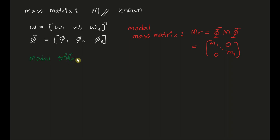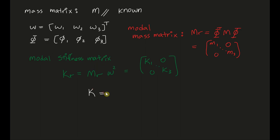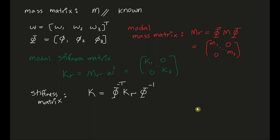The modal stiffness matrix Kr is a combination of the modal mass matrix and the eigenvalues: Kr = Mr ω². This gives a diagonal matrix. When we began this process we had no idea what the stiffnesses were in this three-story building. Using just an impact hammer and a few sensors, we identified the mode shapes and eigenvalues and used this development to identify the stiffness matrix K = φ⁻ᵀ Kr φ⁻¹.